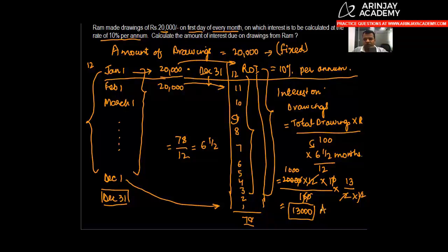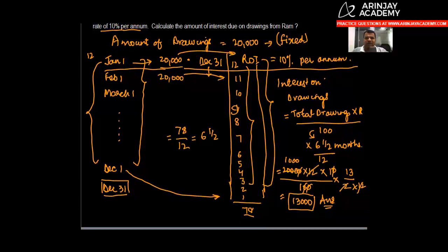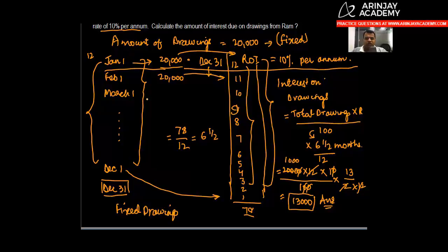In other words, simply what we conclude from this exercise is that if you make a fixed amount of drawing—please note we had 20,000 worth of drawing every month. If this number changes from month to month, then we cannot apply this formula.